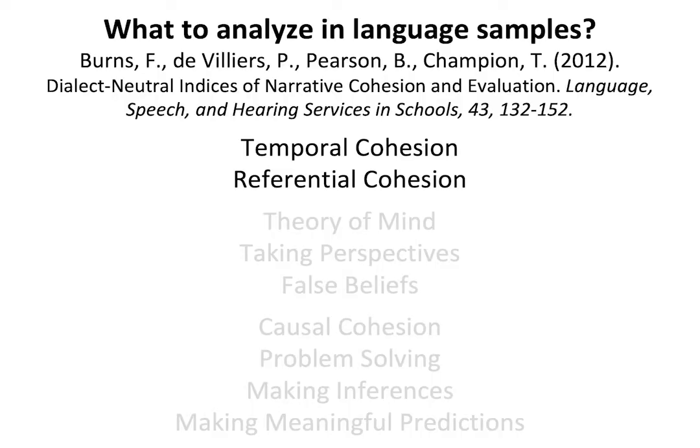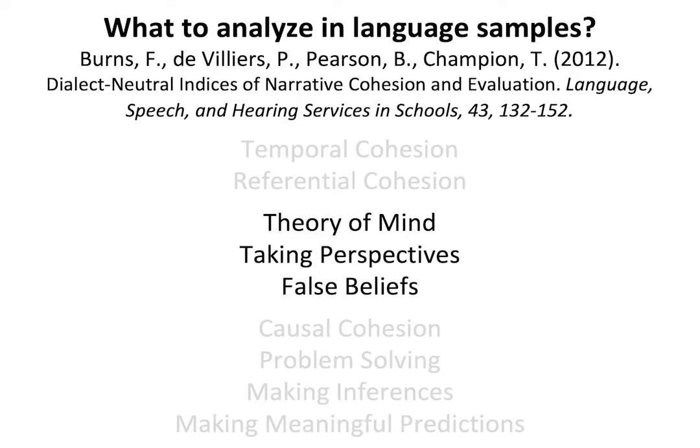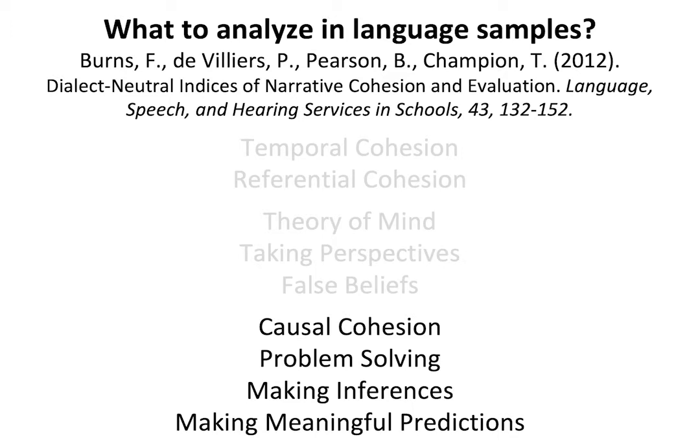The micro structures include: one, temporal cohesion and referential cohesion — do we understand time markers and who the child is referring to in the narrative? Next is theory of mind — taking perspectives and false beliefs — which is more social pragmatic language. Kids with autism spectrum disorder or social pragmatic language disorders have great difficulty understanding theory of mind. And then causal cohesion — how one event connects to the other, cause and effect, problem solving, making inferences, and making meaningful predictions: 'What do you think is going to happen next?'